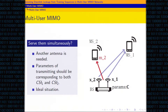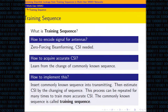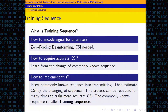The next question is how to get accurate CSI while CSI is changing rapidly. The most powerful method is to use training sequence. Before transmitting actual payload, the base station and mobile users use publicly known training sequences as a reference to estimate CSI between them. To use zero-forcing beamforming to encode messages, we need CSI. We insert a commonly known sequence into the transmission, estimate CSI based on the changing of that sequence, and that sequence is called the training sequence.